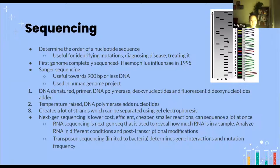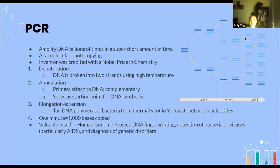PCR is another huge breakthrough for biotechnology in genetics. PCR allows one copy of DNA to be copied billions of times in a very short amount of time, and it's also called molecular photocopying. Its inventor was credited with a Nobel Prize. The first step of PCR is denaturation, when DNA is broken down into two strands; then annealing, when DNA synthesis starts; and elongation, when the two strands turn into two complete new strands of DNA.